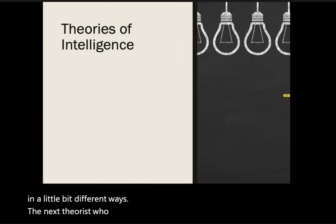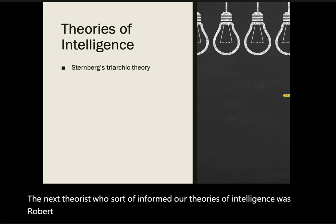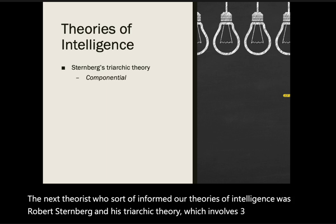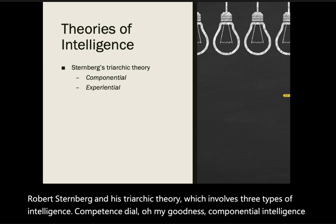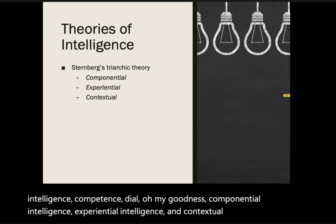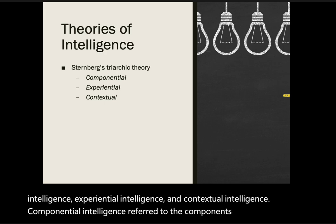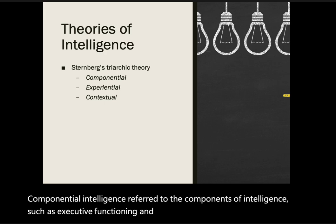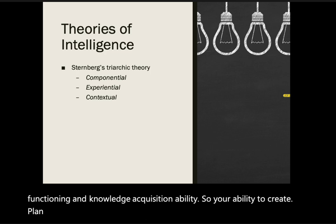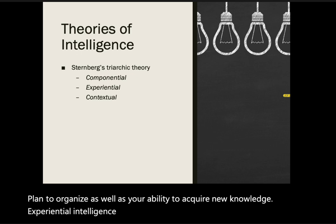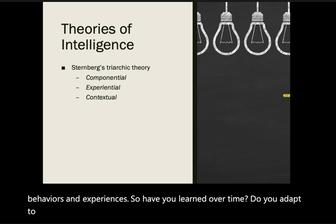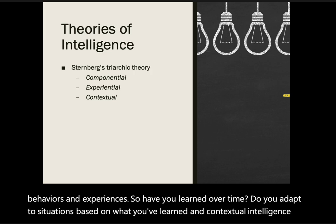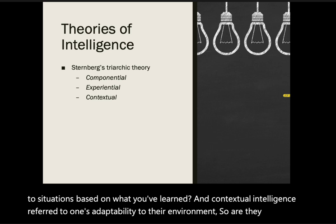The next theorist who informed our theories of intelligence was Robert Sternberg and his triarchic theory, which involves three types of intelligence: compensual intelligence, experiential intelligence, and contextual intelligence. Compensual intelligence referred to components such as executive functioning and knowledge acquisition — your ability to create, plan, organize, and acquire new knowledge. Experiential intelligence related to the ability garnered from previous behaviors and experiences, and whether you adapt based on what you've learned. Contextual intelligence referred to one's adaptability to their environment and ability to problem-solve in the moment.